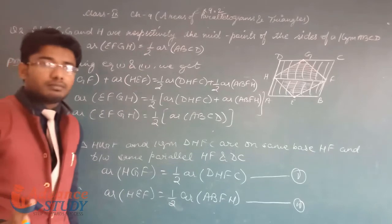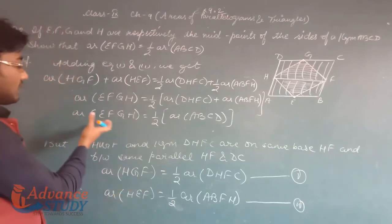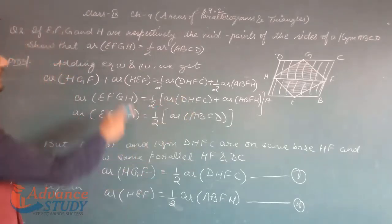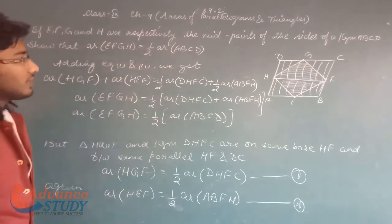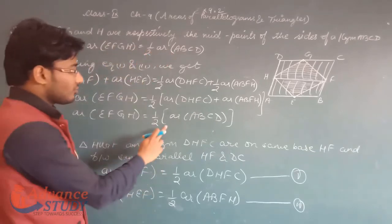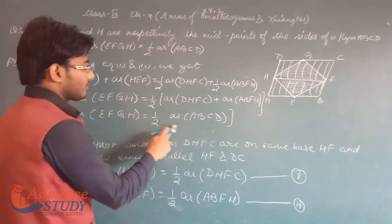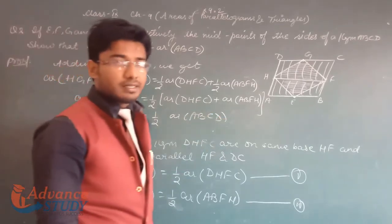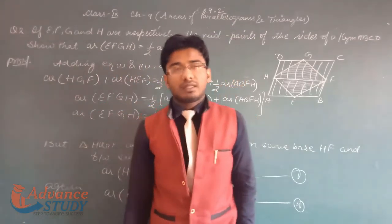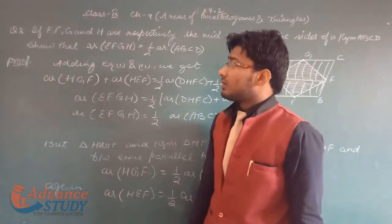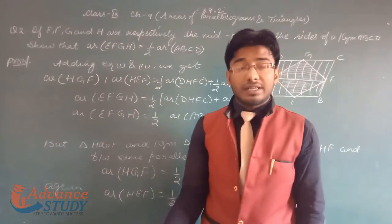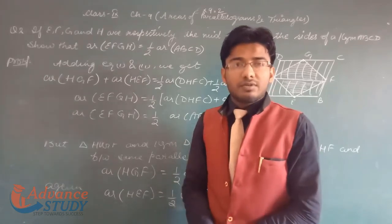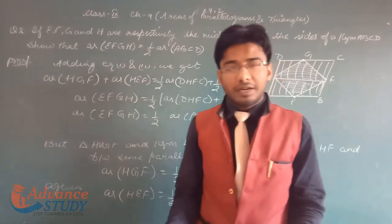So this is now proved: area of EFGH is equal to 1/2 area of ABCD. Some students may still be confused, but it is a basic concept. Question number 3 will be discussed in the next video. Please like, share, and subscribe to our channel. Thank you, and thanks for watching Advanced Study.